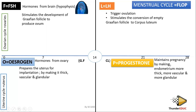Progesterone is very important in maintaining the pregnancy. How does it maintain the pregnancy? By making the endometrium wall more thicker, more vesicular, and more granular. Notice the word 'more' — it is already thick, but it makes it more thicker. It's already vesicular, but more vesicular. It's already granular, and then it makes it more granular.